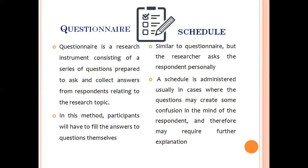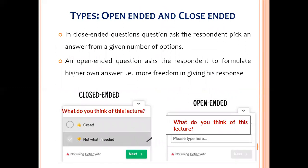There are two types of questionnaires: open-ended and closed-ended. In a closed-ended questionnaire, the respondent selects from options provided by the researcher — for example, rating a lecture as good, bad, or some other option. In an open-ended questionnaire, the respondent has the freedom to give their own answer — for example, if I say 'what do you think of this lecture?' and leave a blank for you to fill in, that is an open-ended question.